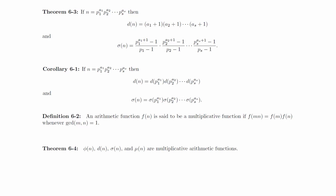Theorem 6-4: Phi of n, d of n, sigma of n, and mu of n are multiplicative arithmetic functions. We won't prove this in the videos, but it just comes down to looking at the prime factorizations and remembering the condition that you must break the product into relatively prime pieces.